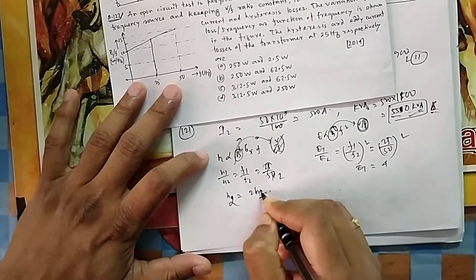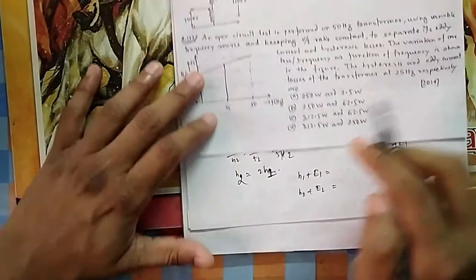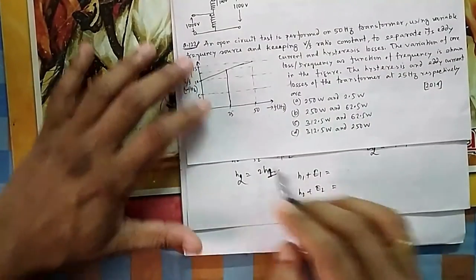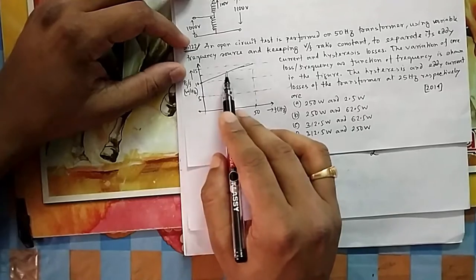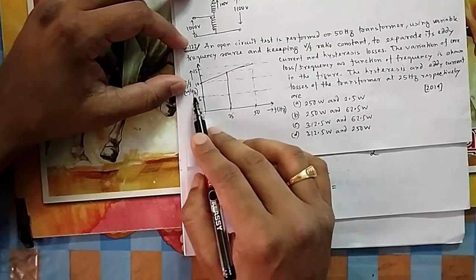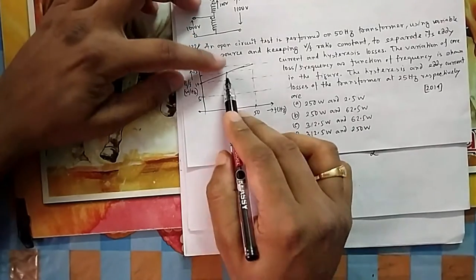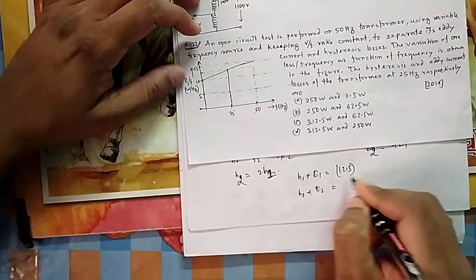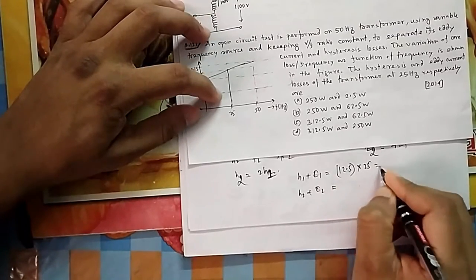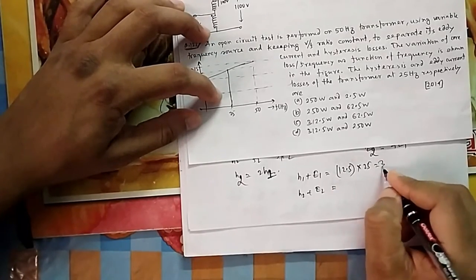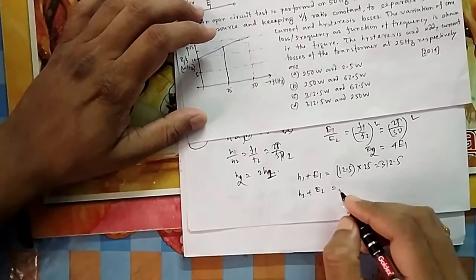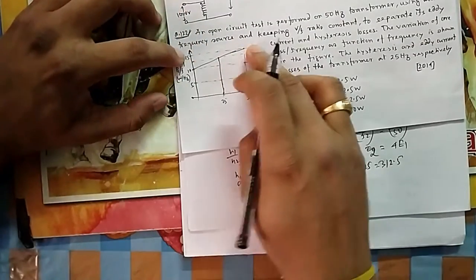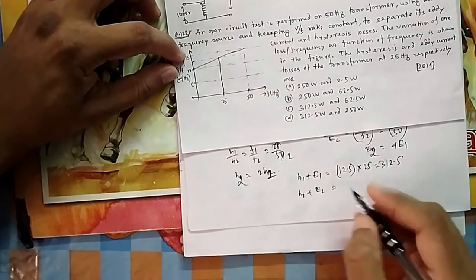It will be again 25 by 50 whole square, which means your E1 is equal to E2 divided by 4. E2 will be equal to 4 times E1. Now what is your H1 plus E1 at 25 Hz? You can see this slope - it is actually in between these two - it is 12.5 watt per hertz. So hertz is 25, so at 25 the total loss will be 12.5 per hertz and hertz is here 25, so if you take product of this one, this is the H1 plus E1.